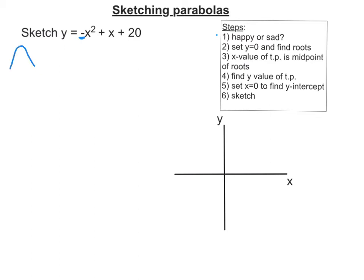Then for step 2, we set y equal to 0 and find the roots. So 0 is equal to negative x squared plus x plus 20. Now, I'm not a big fan of having coefficient of x squared as negative, so I'm going to times everything by negative 1. So this becomes x squared minus x minus 20.